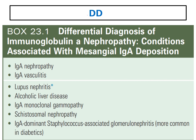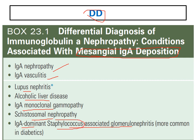For differential diagnosis, conditions associated with mesangial IgA deposition include IgA nephropathy, IgA vasculitis, lupus, alcoholic liver disease, IgA monoclonal gammopathy, schistosomal nephropathy, and importantly IgA-dominant staphylococcal-associated glomerulonephritis — a pattern of post-infectious GN mainly caused by staphylococci but IgA-dominant, more common in diabetics.